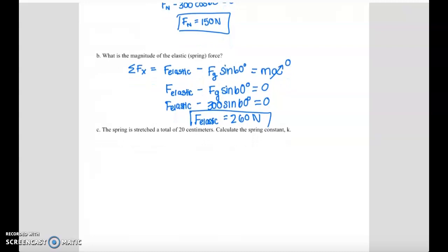And the last part of this problem says the spring is stretched 20 centimeters. Calculate the spring constant K. This is referring to Hooke's Law. F equals negative K delta X. Or K is equal to F over delta X. Notice that I've dropped that negative sign. That negative is just a reminder of directions. That force is always opposite of the stretch. The elastic force that we just found in part B, 260. And the stretch of 20 centimeters or 0.20 meters. This turns out to be a K of 1,300 Newtons per meter. And those are the standard units of K.